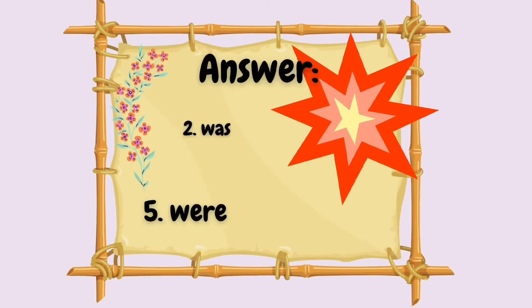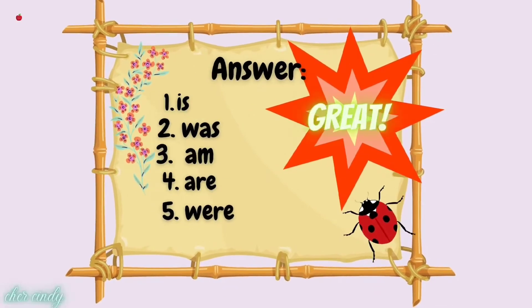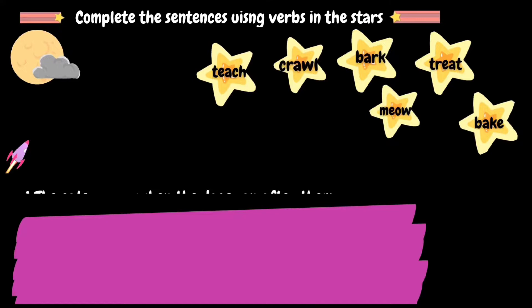Now let's check your answers. Number 1: is. Number 2: was. Number 3: am. Number 4: are. And number 5: were.